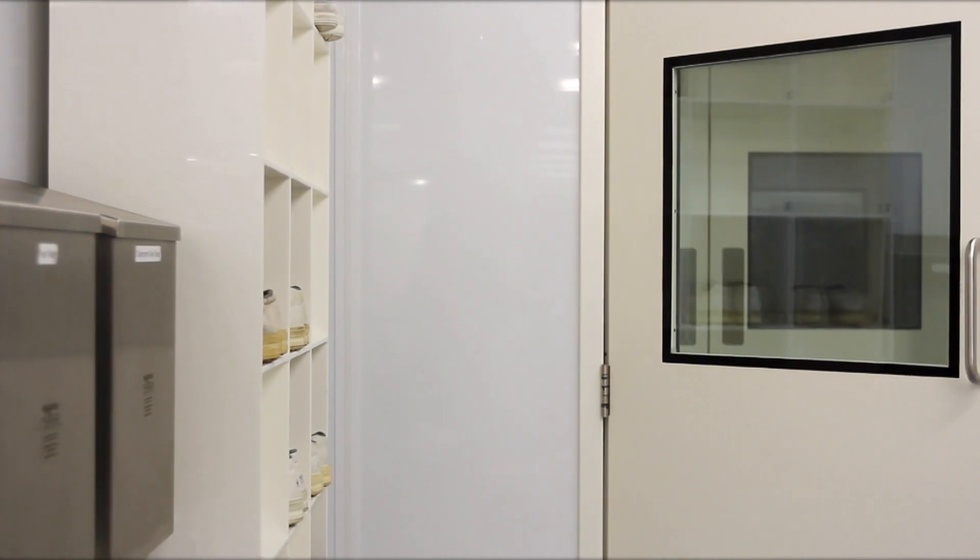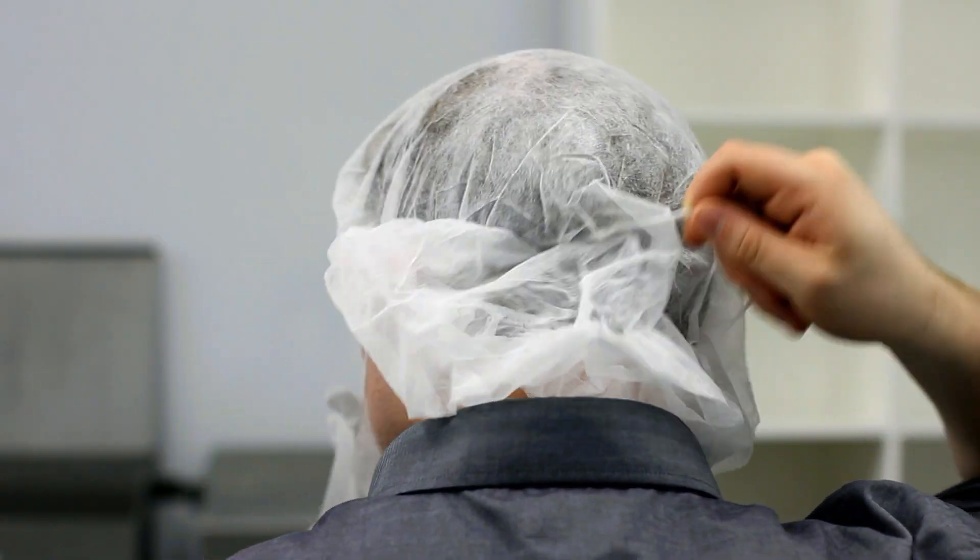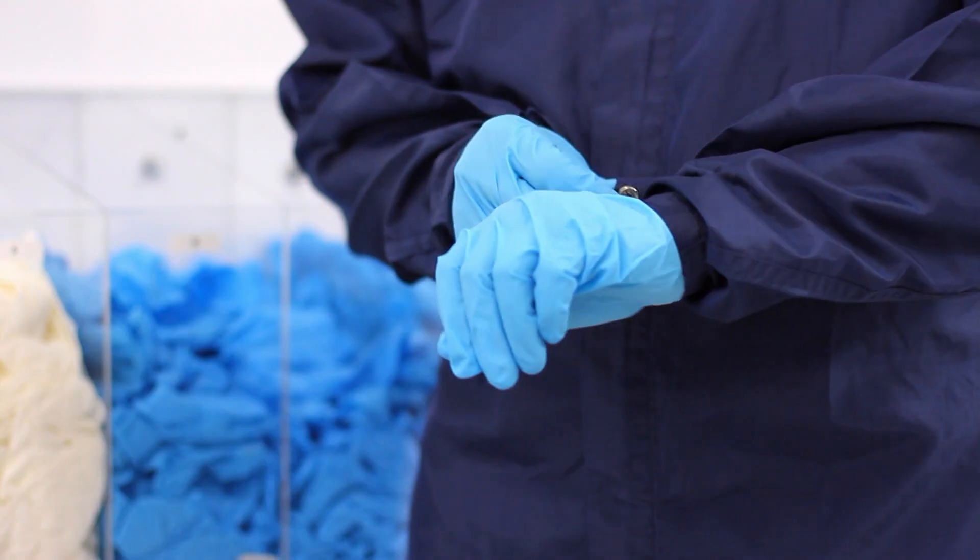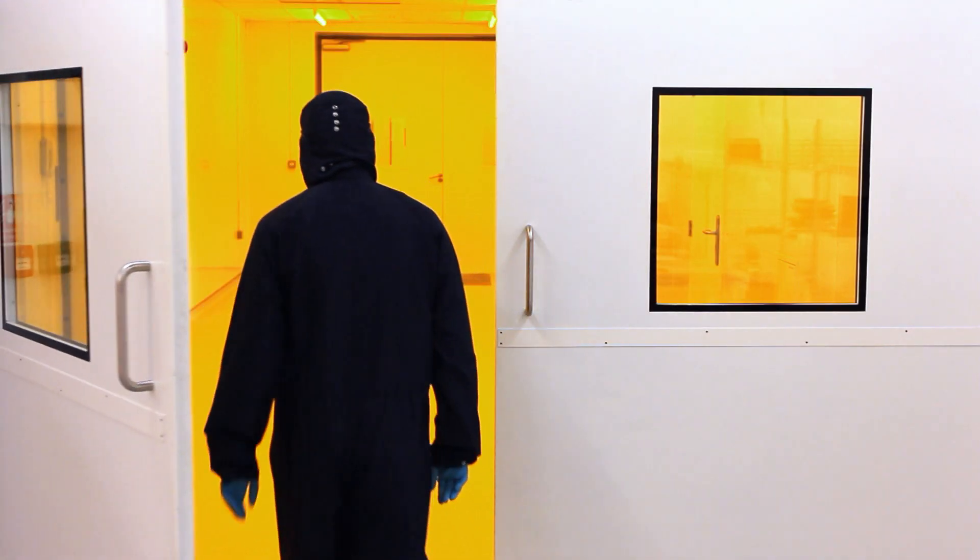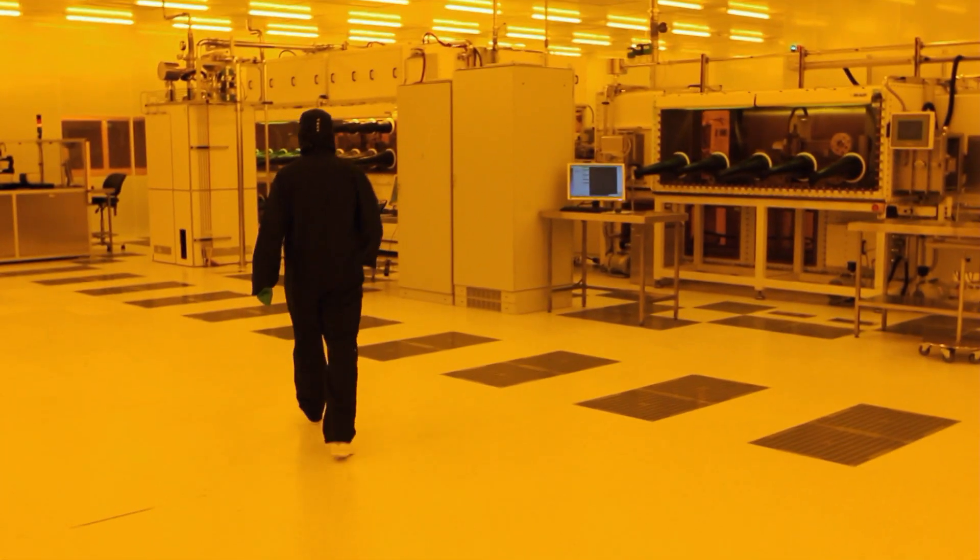CPI's OLED OPV prototyping line has been designed to enable the development and production of both organic light-emitting diode and organic photovoltaic technologies. The line enables users to address some of the challenges faced by the industry in scaling up the technology to wide area and, ultimately, commercialisation.